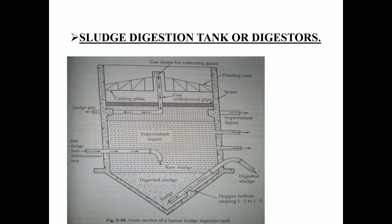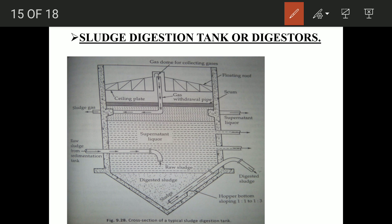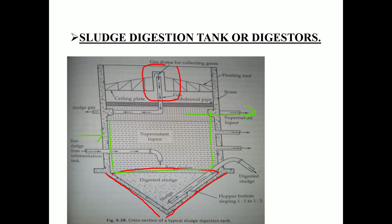Now let's look at the sludge digestion tank and digesters. This is a basic section of a typical sludge digestion tank. Gases are collected in the upper region. There is a conical hopper section at the bottom. Digested sewage is collected at the bottom, while raw sludge enters and supernatant liquid is drawn off separately.